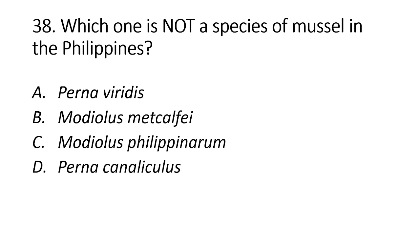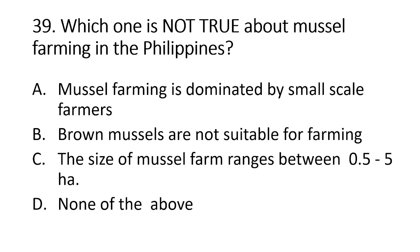Number 38. Which one is not a species of mussel in the Philippines? A. Perna viridis. B. Modiolus metcalfei. C. Modiolus philippinarum. D. Perna canaliculus. The answer is letter D, Perna canaliculus. Number 39. Which one is not true about mussel farming in the Philippines? A. Mussel farming is dominated by small-scale farmers. B. Brown mussels are not suitable for farming. C. The size of mussel farm ranges between 0.5 to 5 ha. D. None of the above. The answer is letter D, none of the above.